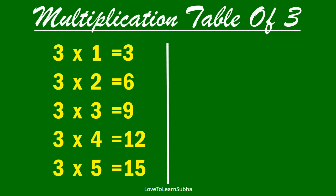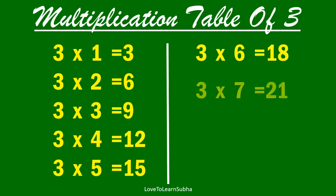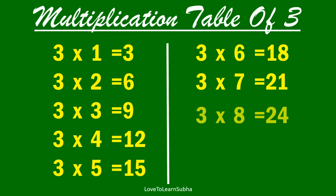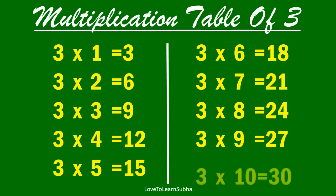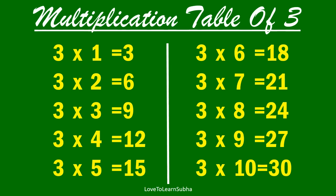Multiplication table of 3. 3 six is 18, 3 seven is 21, 3 eight is 24, 3 nine is 27, 3 ten is 30.